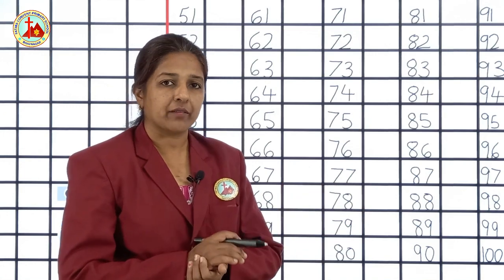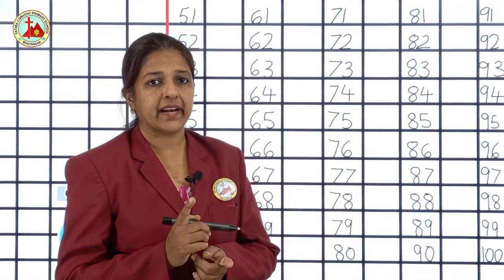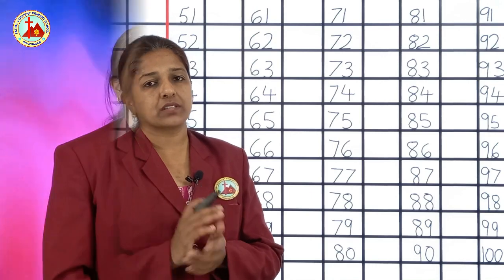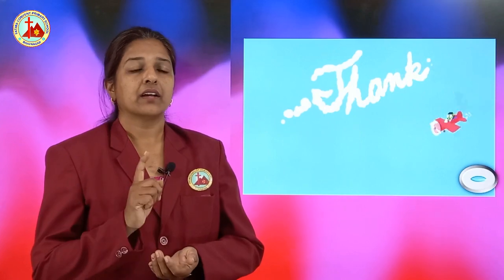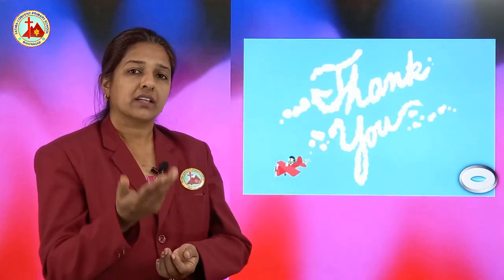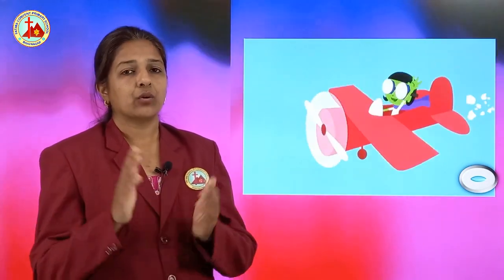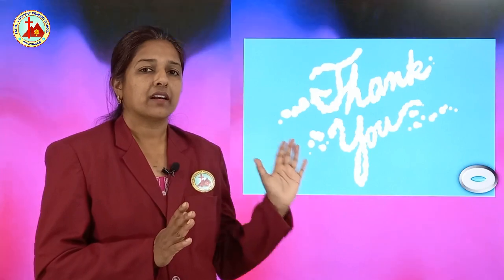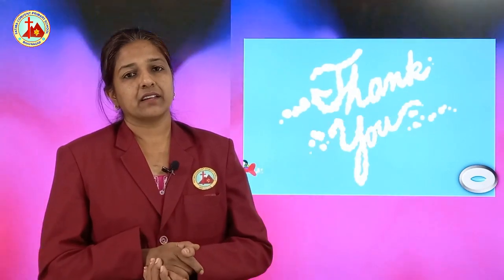Like this children, you all have to write numbers from 1 to 100 in your square line books. I hope you all have understood how to write numbers from 1 to 100. Write 1 line, then leave 1 line and write the next line. Don't write in a dirty way, write how miss has taught you. Do the homework of this session and send it. Okay children, bye. Thank you.